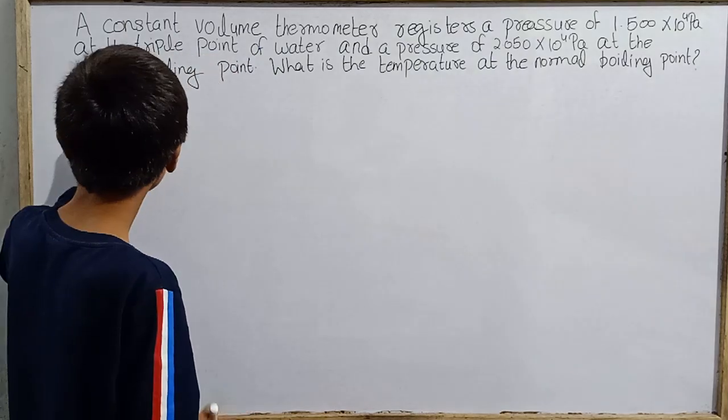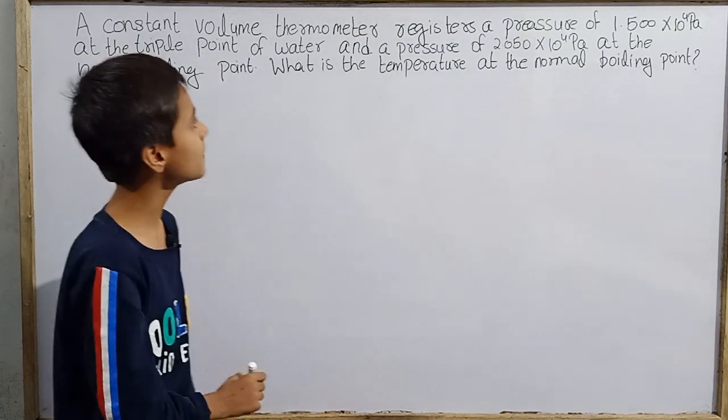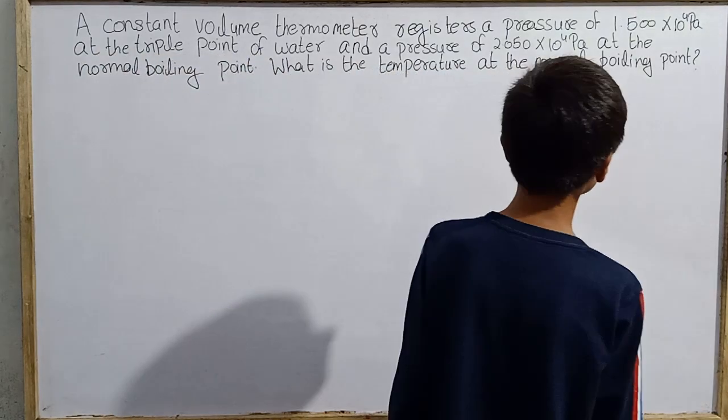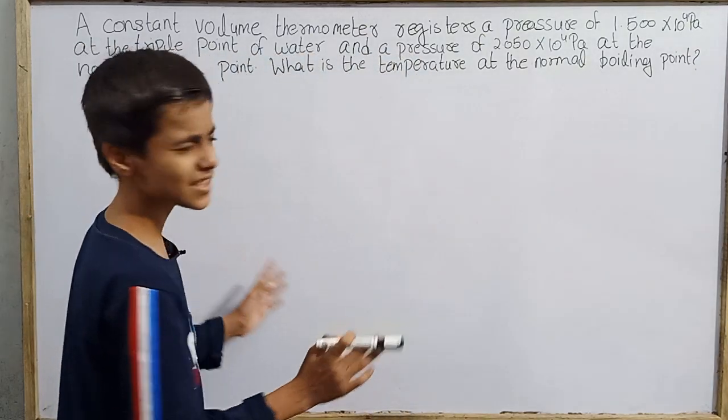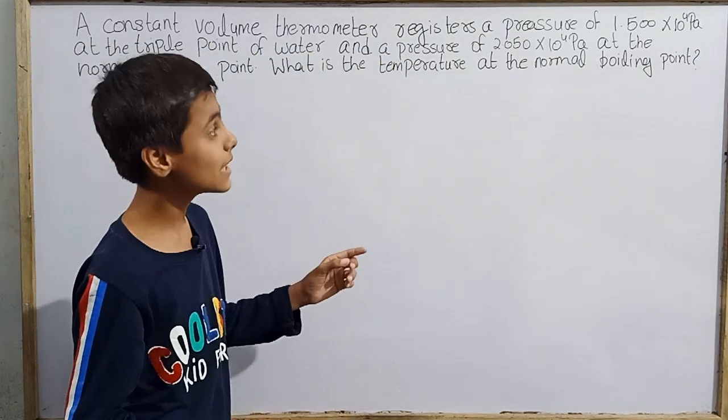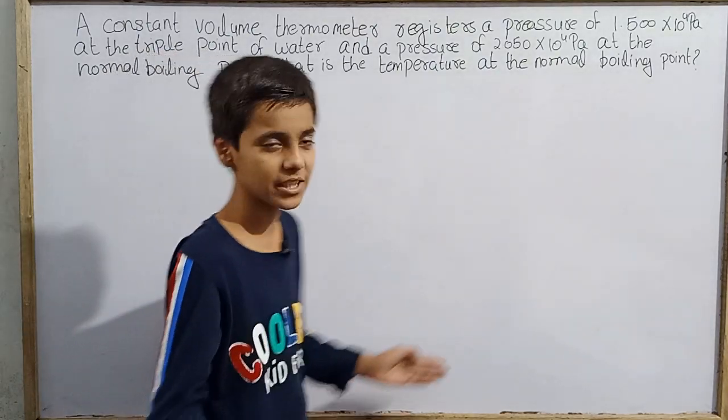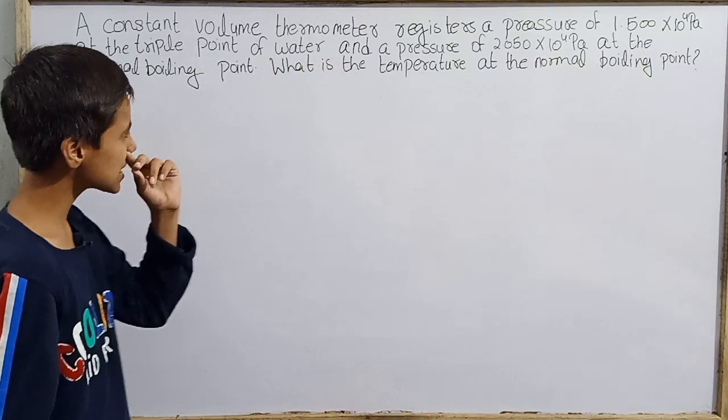Okay, getting back to our question. A constant volume thermometer registers a pressure of 1.500 into 10 power 4 pascal at the triple point of water and a pressure of 2.050 into 10 power 4 pascal at the normal boiling point. What is the temperature at the normal boiling point? This is the question.